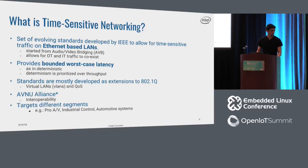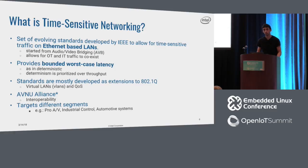Then we created something called time-sensitive networking. It's a set of standards developed by the IEEE, and what we're trying to do is enable Ethernet-based LANs to handle time-sensitive traffic in addition to best-effort traffic. It started as audio-video bridging (AVB), maybe five or six years ago, and then it was renamed to TSN. The key takeaway is that TSN allows both time-sensitive and best-effort traffic to coexist on the same network, providing a bounded worst-case latency for time-sensitive traffic.